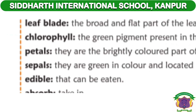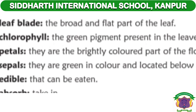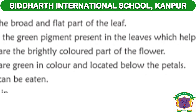Number 3: Petal. P-E-T-A-L. Dash — they are the brightly colored part of the flower. B-R-I-G-H-T-L-Y, C-O-L-O-U-R-E-D, P-A-R-T, F-L-O-W-E-R. Full stop.